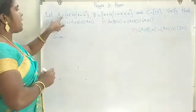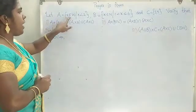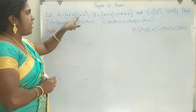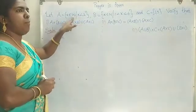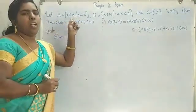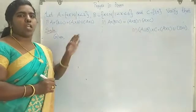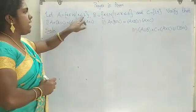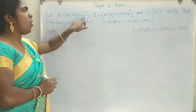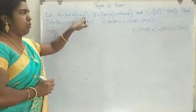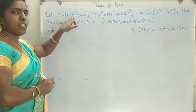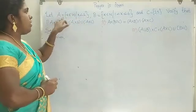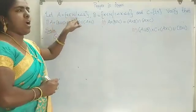A is equal to the set of X belonging to W such that X is less than 2. W means whole numbers, which start from 0, 1, 2, 3, and so on. Since X is less than 2, we do not include 2. The whole numbers less than 2 are 0 and 1. Therefore, A is equal to {0, 1}.